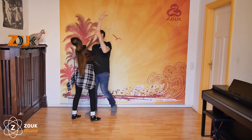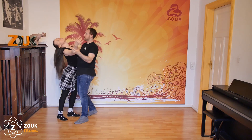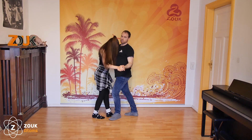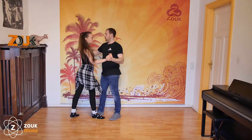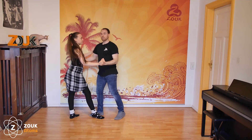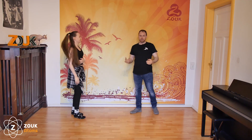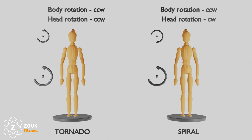This is an example of a transition between the cross system and the parallel system using one spiral or roasted chicken. On the website we play a lot with the ideas of spiral and tornado.